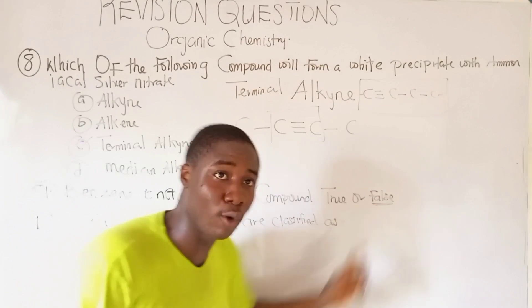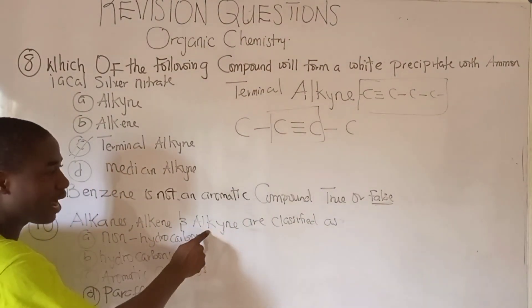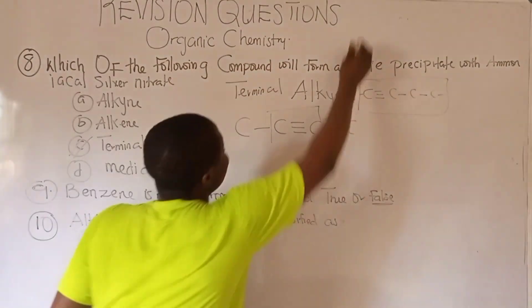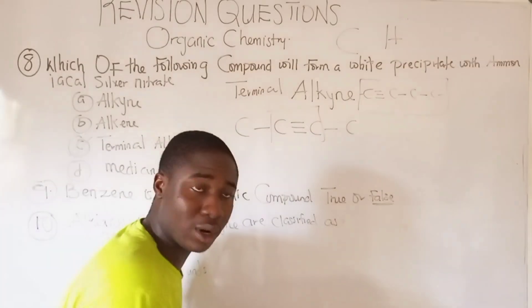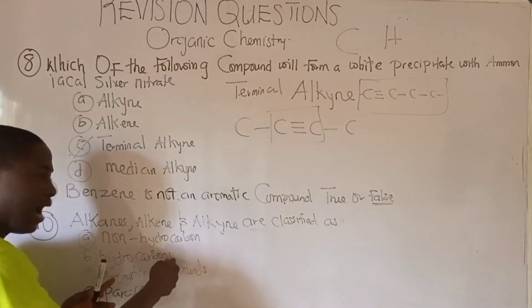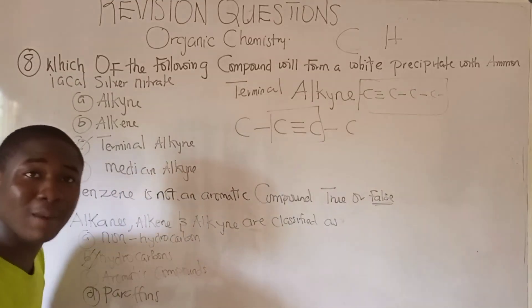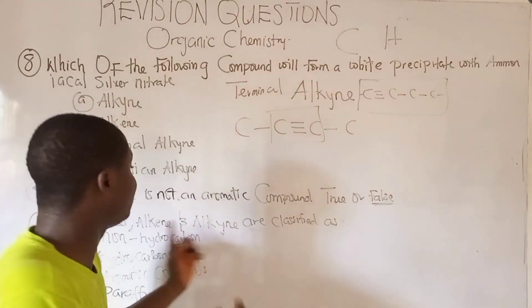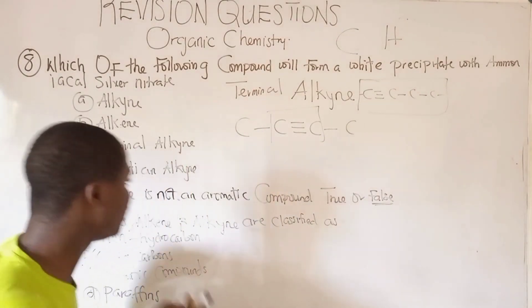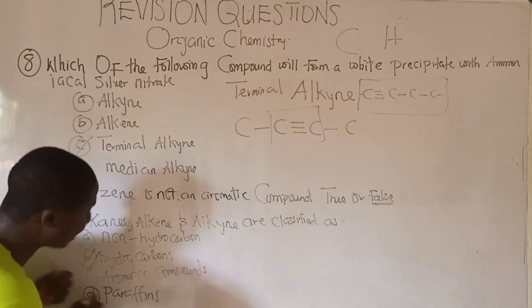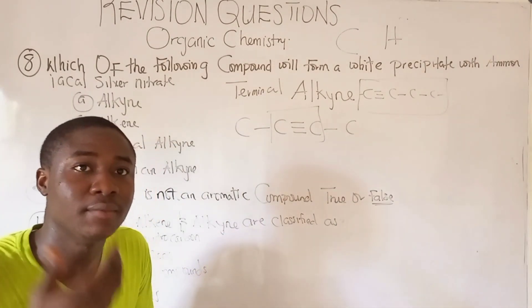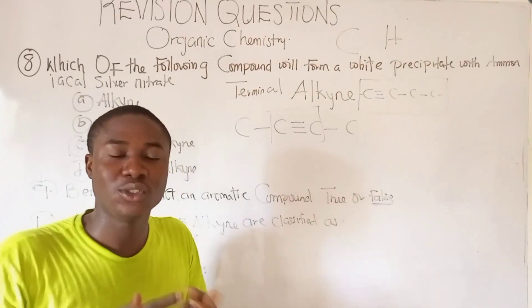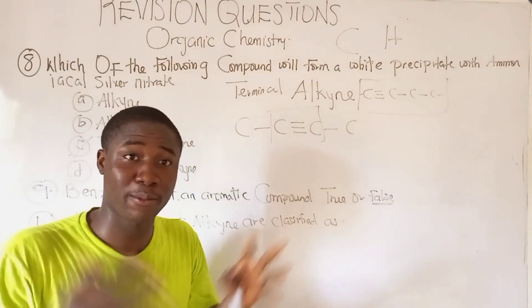Question 10: alkenes, alkanes, and alkynes are classified as — option A: non-hydrocarbon (no, they are hydrocarbons containing carbon and hydrogen); option B: hydrocarbons (correct); option C: aromatic compounds (no); option D: paraffins (no — it must be noted that alkanes are regarded as paraffins, meaning little reactivity). These 10 organic chemistry questions are very important. If you like this video, please subscribe and share. Thank you and God bless.